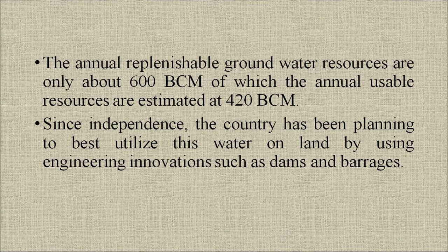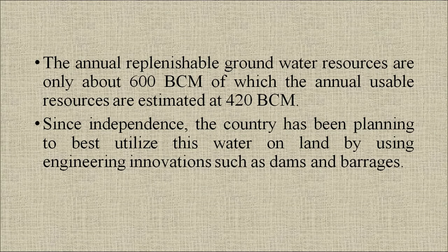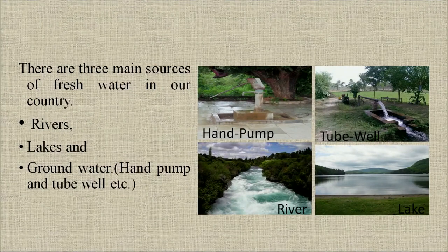Since independence, the country has been planning to best utilize this water on land by using engineering innovations such as dams and barrages. There are three main sources of fresh water in our country: the rivers, lakes, and groundwater, which we can access through hand pumps or tube wells, as you can see in the diagram.